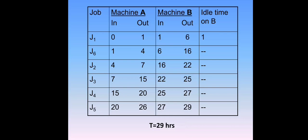Machine B starts after the completion of machine A. For J1, the initial time in on machine B is 1 hour, with a time duration of 5 hours, so 1 plus 5 equals 6. J6 starts from 6, time duration is 10 hours, so total is 16. J2 starts from 16, duration is 6 hours, so 16 plus 6 equals 22 hours. J3 starts from 22, duration is 3 hours, so 22 plus 3 equals 25 hours.